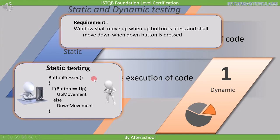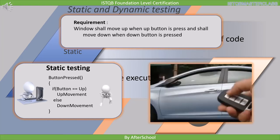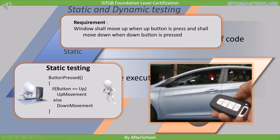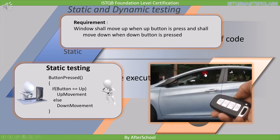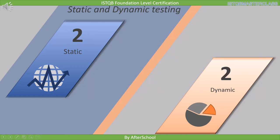So why do we call this static? Because when I was performing this test, this code was not moving — it was in one place. This is why this type of testing is called static testing. Now moving on to the dynamic part. Dynamic testing requires you to study the behavior. Here if you press the down button, the window moves down. You aren't bothered about the code or how it is written. When you press the up button the window moves up, and when you press the down button it slides down. Static testing is carried out without execution of code, while dynamic testing requires execution of code.